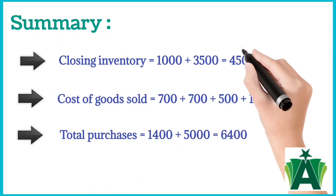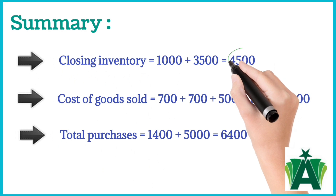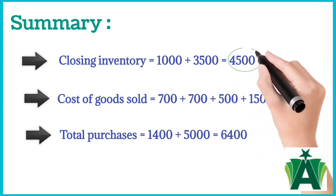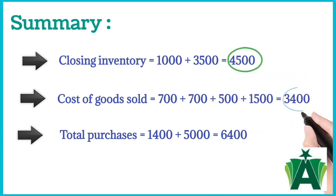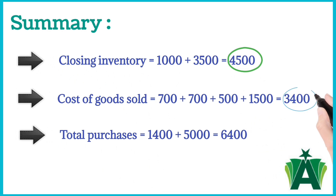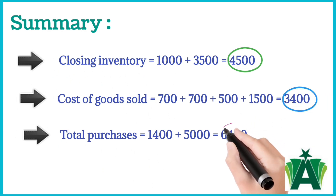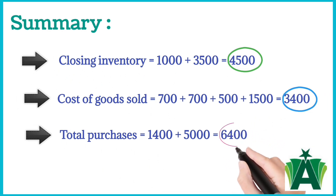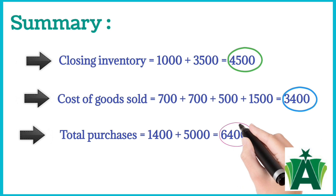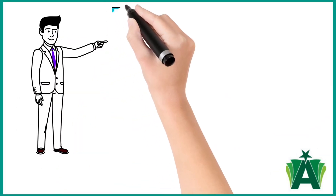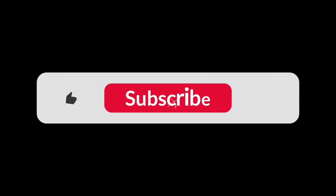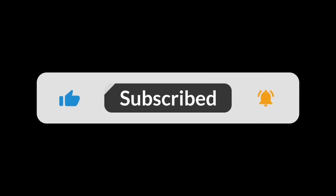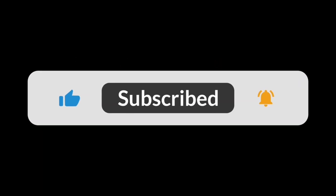Summary: the total value of closing inventory is $4,500, cost of goods sold is $3,400, and the total value of purchases is $6,400. I hope this helps. Let me know if you have any other questions. If you like the video, please subscribe to our channel and press the bell icon for regular updates.